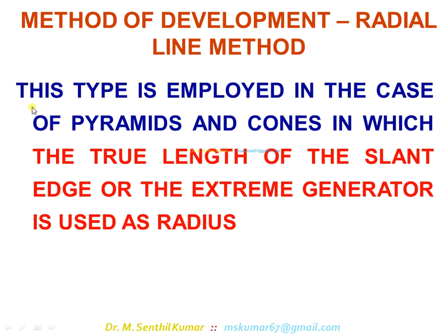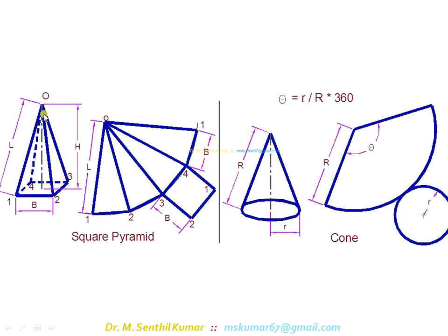The radial line method is employed in the case of pyramids and cones, in which the true length of the slant edge or the extreme generator is used as radius. This is a square pyramid with base side b and height h. For drawing orthographic views, the axis height h is important, but for development, the true slant length — TSL — is very important. You should take this true slant length L only, not the height of the axis. This L is always greater than h.